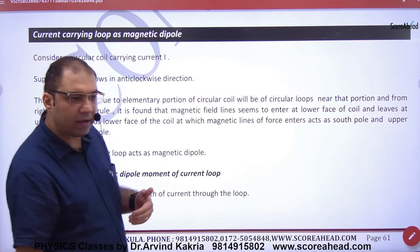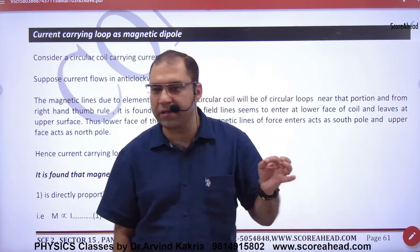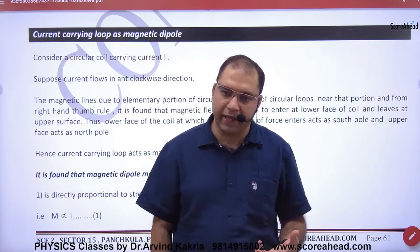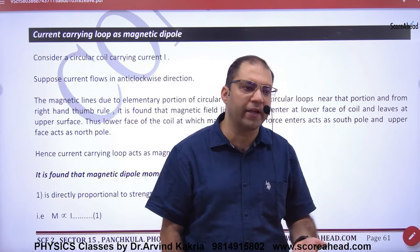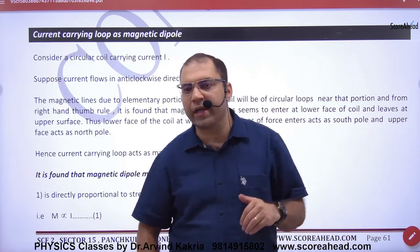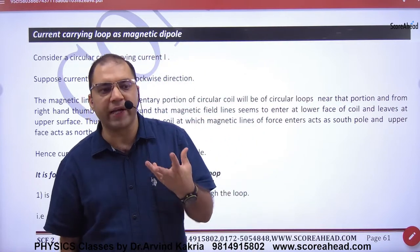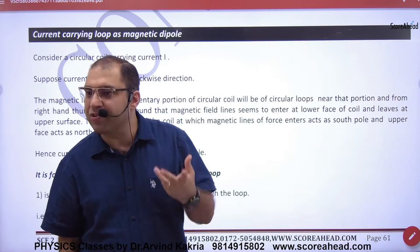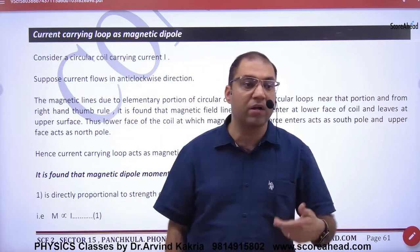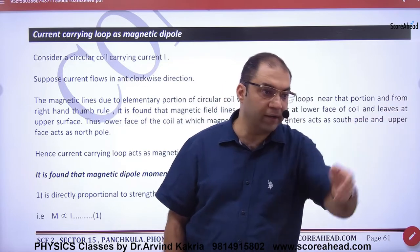Current-carrying loop as a magnetic dipole. Suppose you have a current-carrying loop — a ring with a current. A current-carrying loop generates a magnetic field B in the center. Because it generates B in the center, a current-carrying loop acts like a magnet.